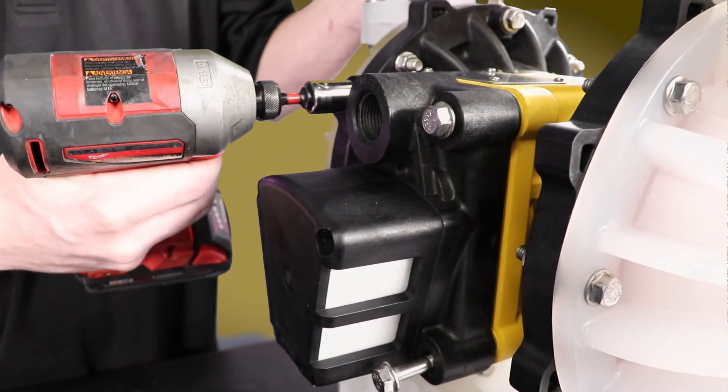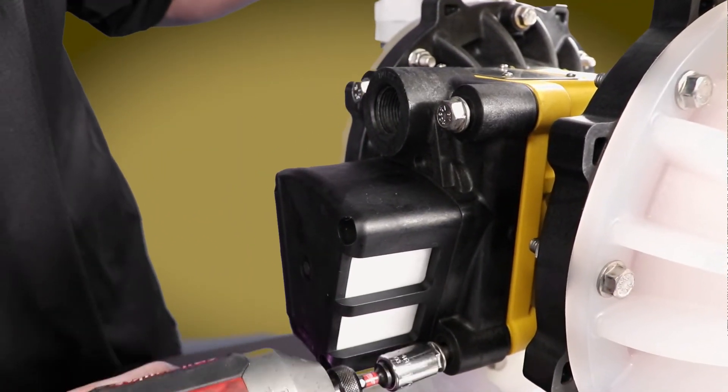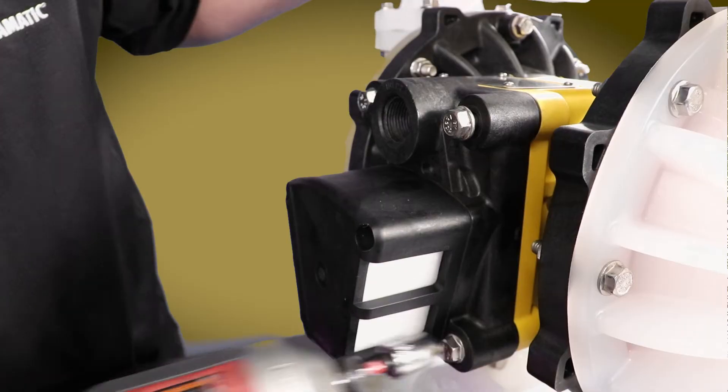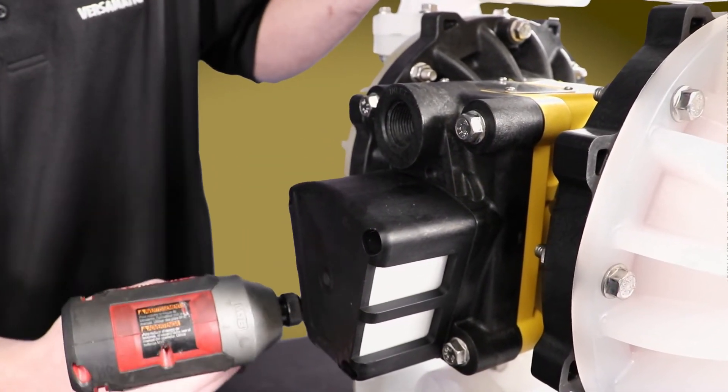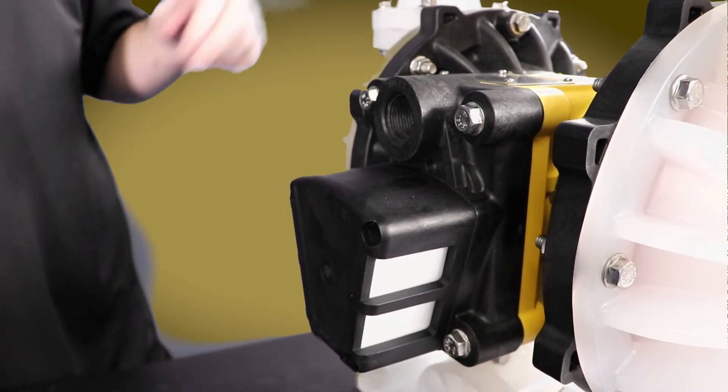Reinstall the outer gasket, air inlet cap, and reinstall the cap screws using a half inch socket to hold the air valve body securely in place. Tighten the cap screws with a half inch torque wrench to 150 inch pounds.